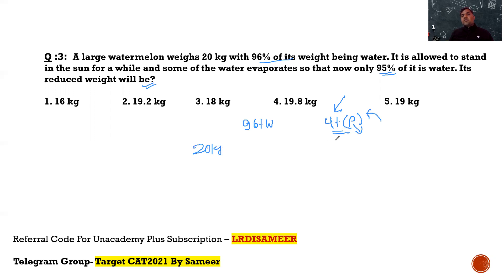So, in 20 kg, 4 percent, that means 0.8 kg is the pulp, and it will still be 0.8 kg when the water is getting evaporated. But because the percentage of water is getting reduced down to 95 percent, so this pulp is now equivalent to 5 percent of total weight but the quantity remains same. So, can I say 5 percent of the total weight is 0.8 kg? So, the total weight here will be 8 into 2, that is 16 kg and that's the answer to the question. That's option number one.